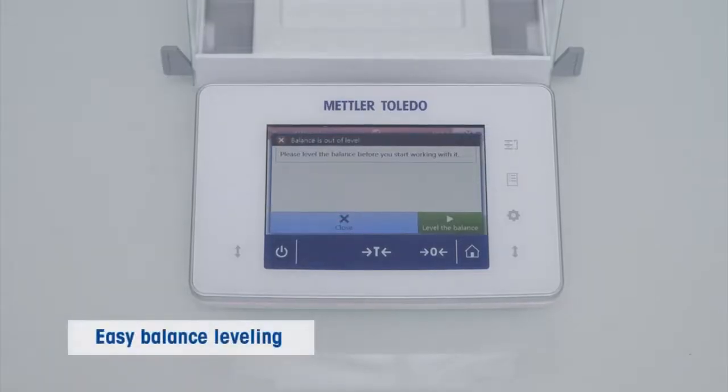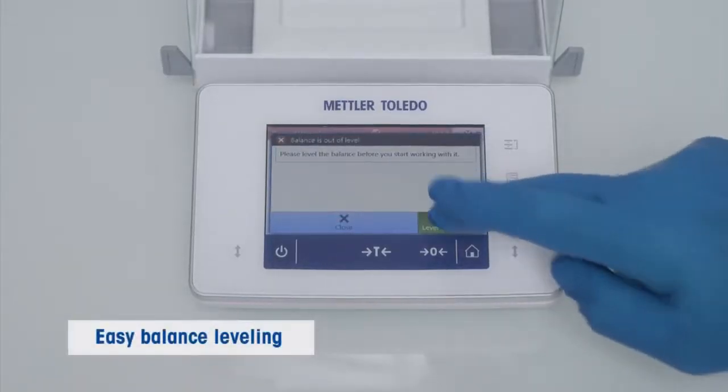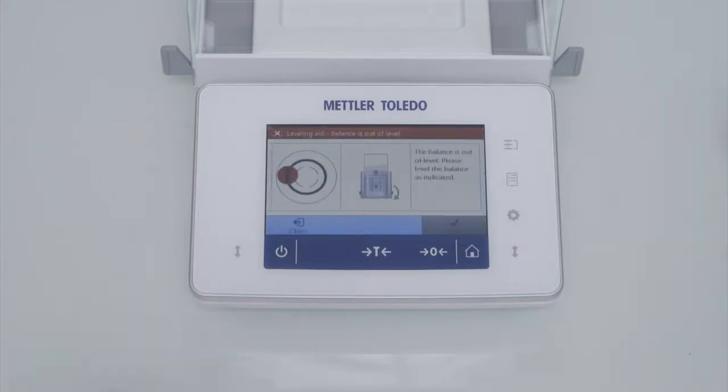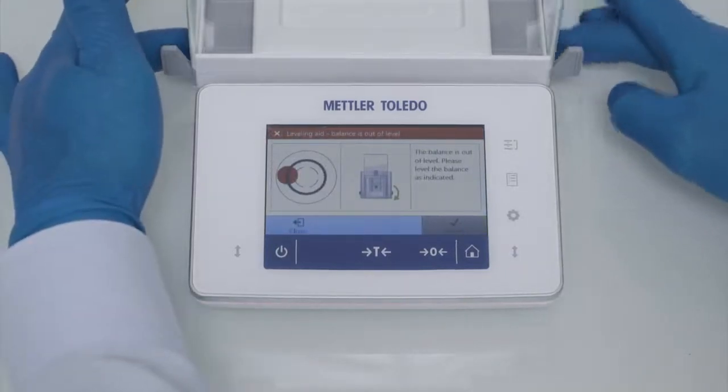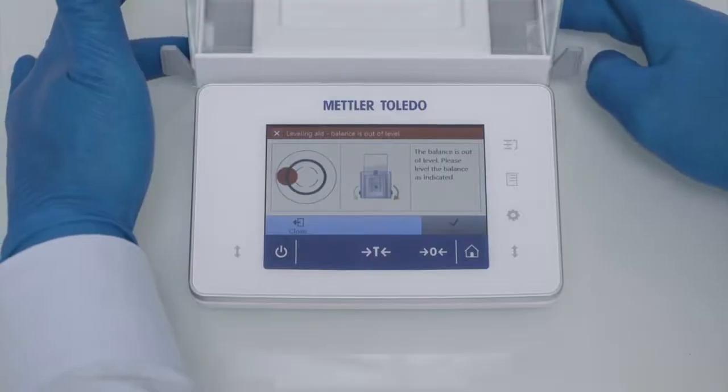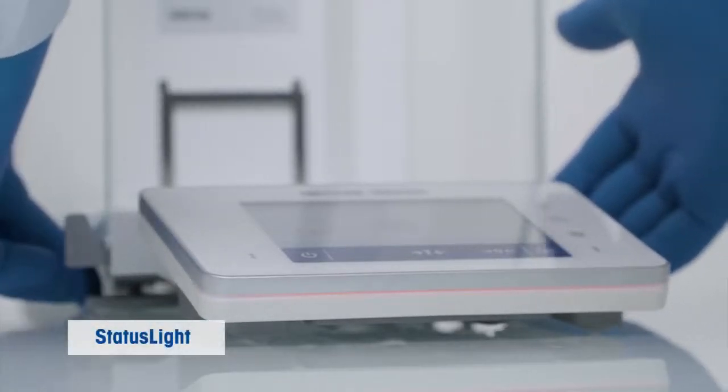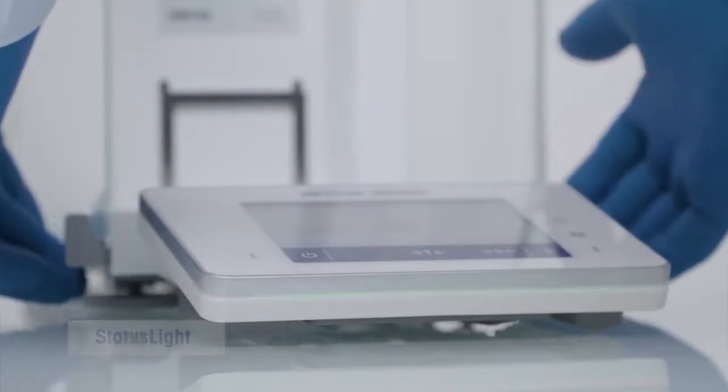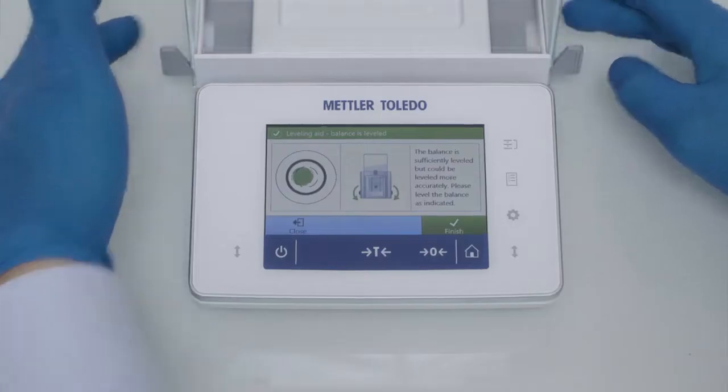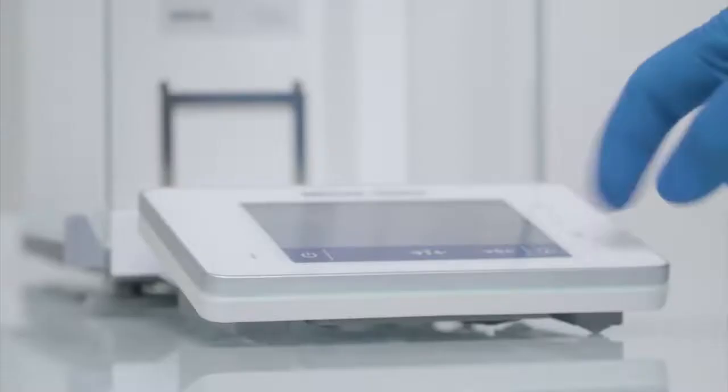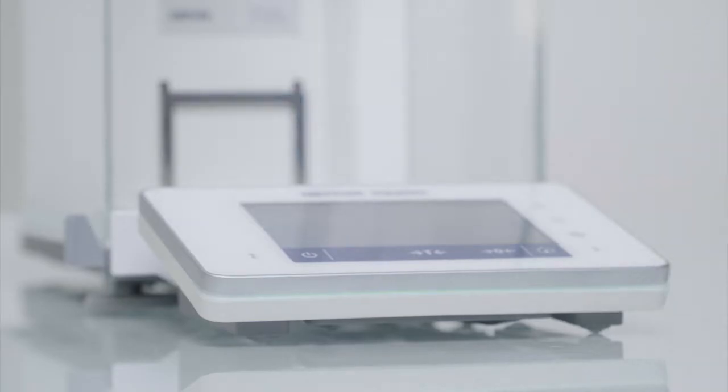First thing before you start weighing is to make sure the balance is leveled. The level bubble on the terminal display indicates the level status in green or red. The two level feet are conveniently accessible from the front of the balance. The status light indicates that the balance is ready to be used, for instance if it's leveled. Green means you can go ahead, red means it needs your attention.